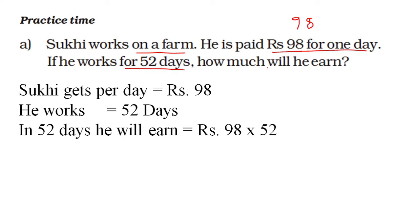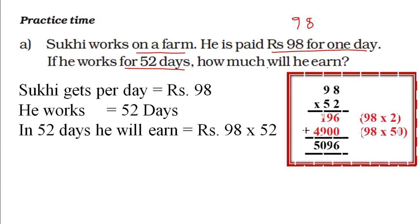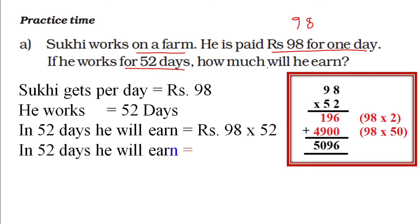So he will get Rs. 98 added up to 52 times, meaning Rs. 98 into 52. So we will multiply this. In first step we will multiply 98 by 2, in second step we will multiply 98 by 50, then in third step we will add that. So in 52 days he will earn Rs. 5096.